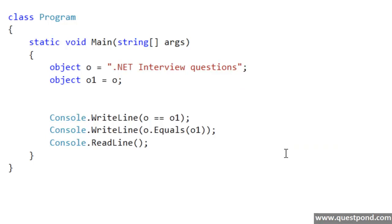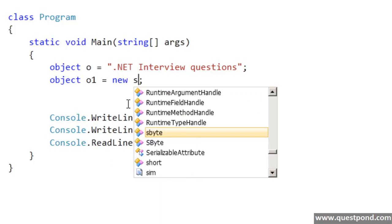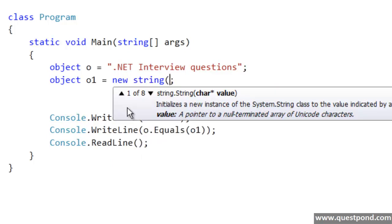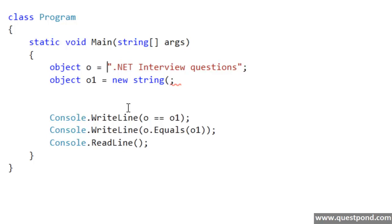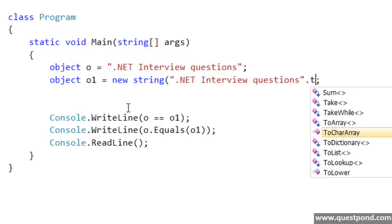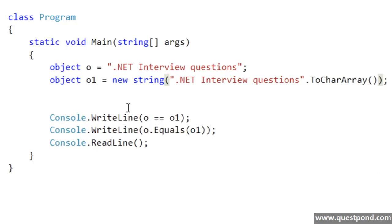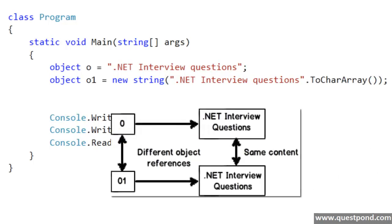Now let us go ahead and change this code a bit. Let me go to object O1 and create a new fresh string object and pass it to O1, taking the same content .NET InterviewQuestions. In this scenario we will have object O pointing towards .NET InterviewQuestions content, and one more object O1 pointing towards the same content .NET InterviewQuestions but as a fresh and new instance.